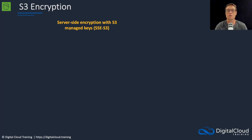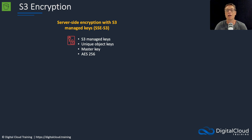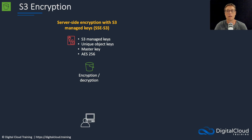We have a few different options for encryption. The first one is known as server-side encryption with S3 managed keys, also known as SSE-S3. This uses S3 managed keys, unique object keys, a master key, and AES-256 encryption. The encryption and decryption takes place on S3 itself, so if you have your customer or client connecting to an S3 bucket, the encryption process is taking place on the S3 side.